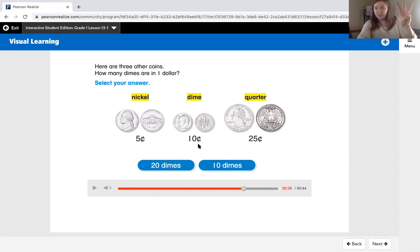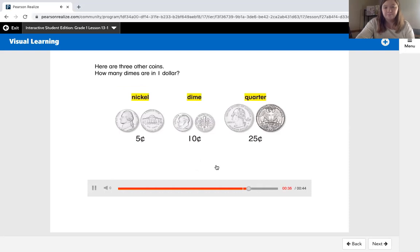10, 20, 30, 40, 50, 60, 70, 80, 90, 100. There are 10 tens in 100, so I know my answer is 10 dimes. There are 10 dimes in one dollar.